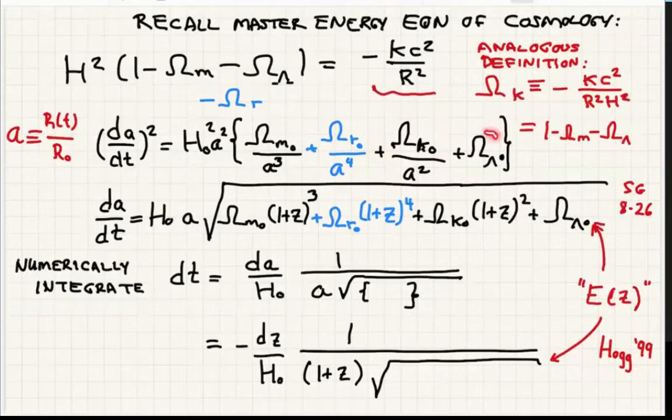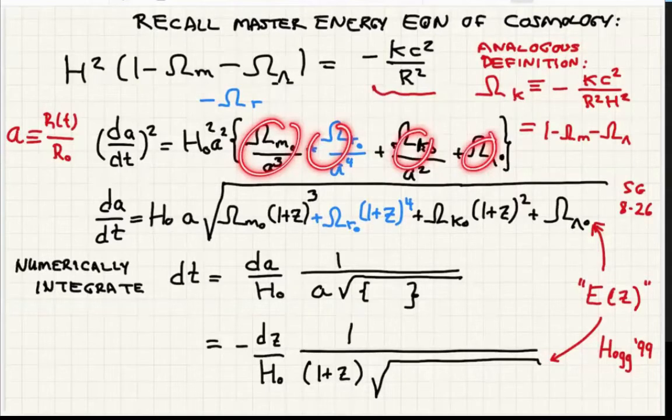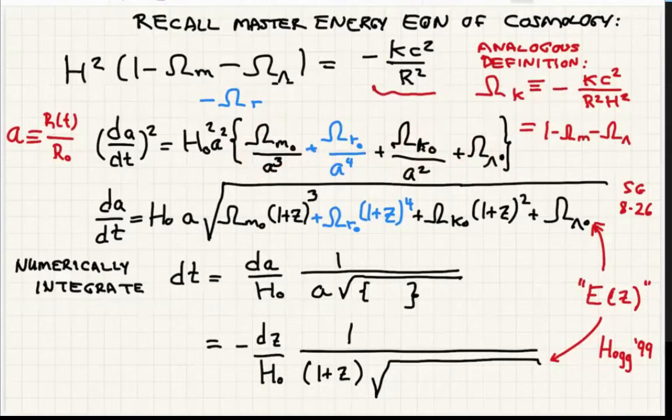We also did a future universe where it looks like we're going to go there. The big rip, where the dark energy dominates. All these other terms have died because A is getting so big. And we got an exponential runaway universe here. We've solved literally every one of these individual terms dominating. But when you put them all in there, it's a mess.